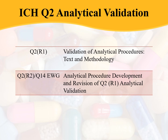Q2 mainly focuses on analytical validation. Q2R1 deals with validation of analytical procedures — the text and methodology. Q2R2 focuses on analytical procedure development and is a revision of Q2R1 for analytical validation.